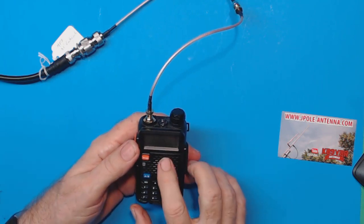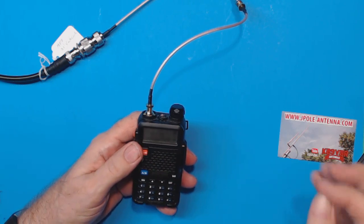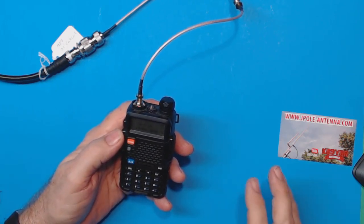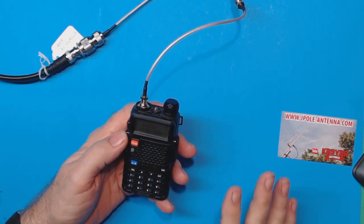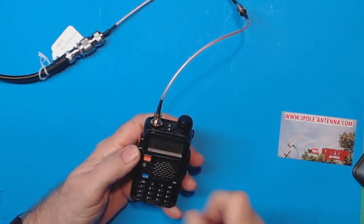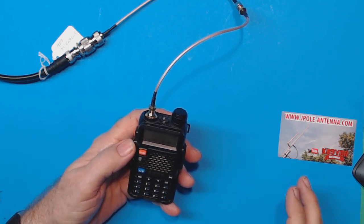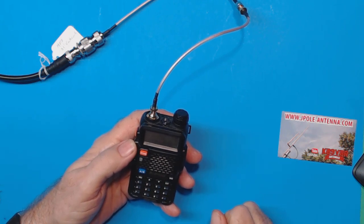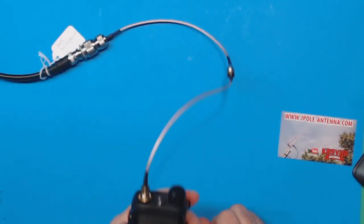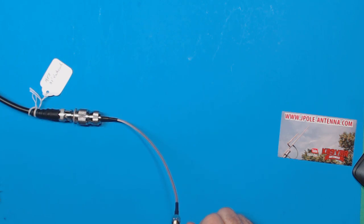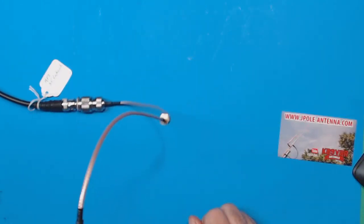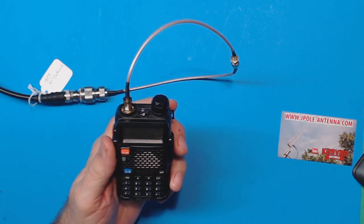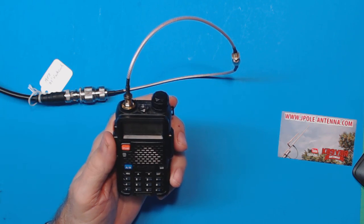We've got to tune to 146.97, which is one of the local repeaters. That repeater is about 10 miles from me. So normally with the built-in rubber ducky antenna, I can't even begin to hit that repeater. We're going to see what that J pole does. Okay, K4GSK testing. Yep, see, I hit the repeater.